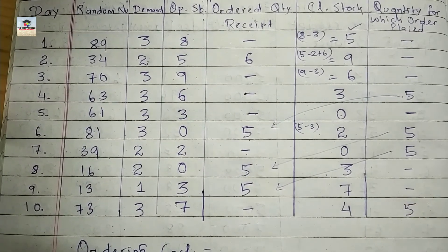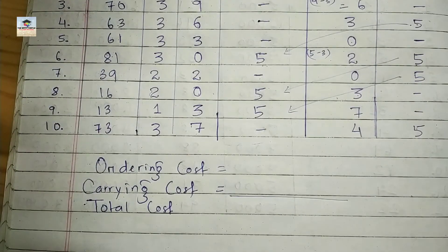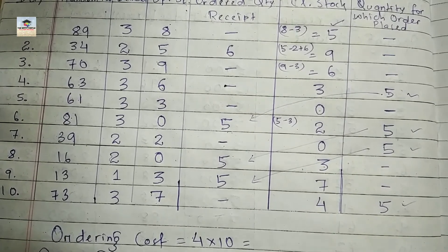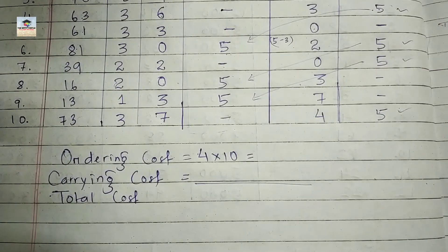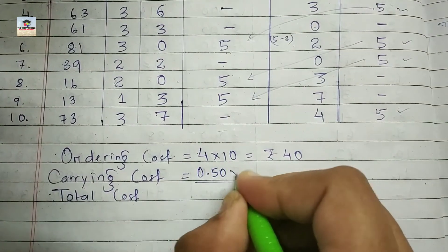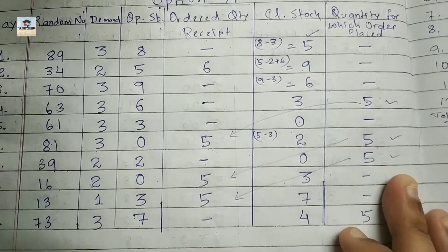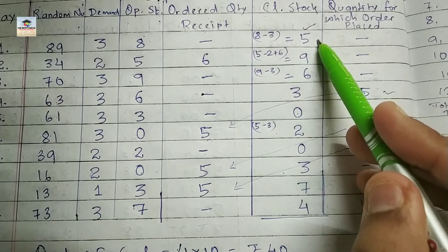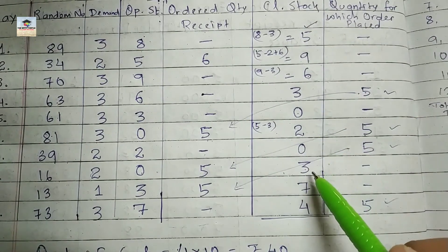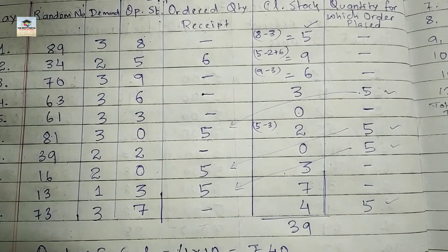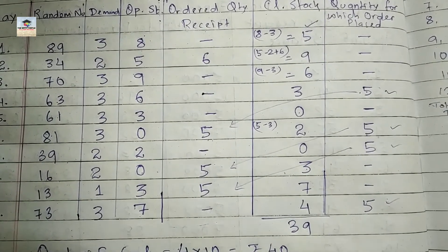To find the total cost for option A: ordering cost is four orders times rupees 10, which is rupees 40. For carrying cost, sum the closing stocks: five plus nine plus six plus three plus zero plus two plus zero plus three plus seven plus four equals 39 books. Carrying cost is 0.5 times 39, which is rupees 19.5. Total cost for option A is rupees 59.50.